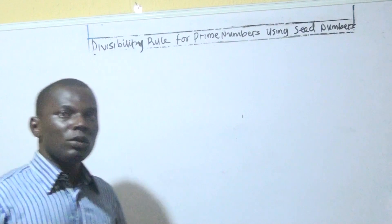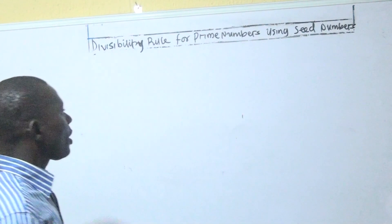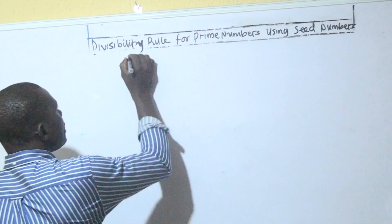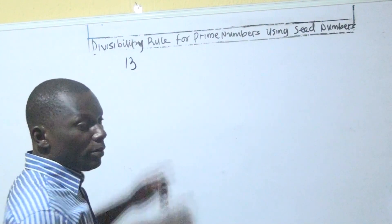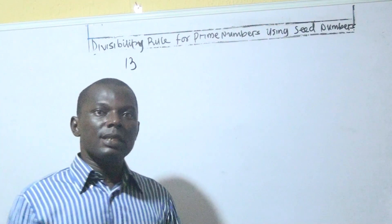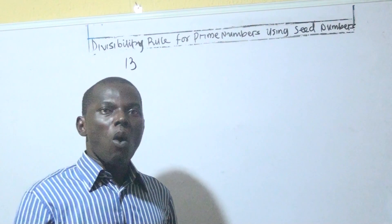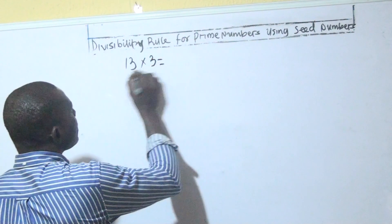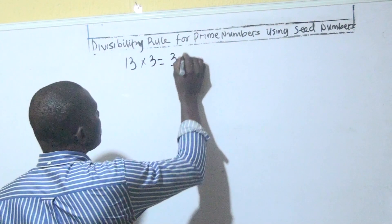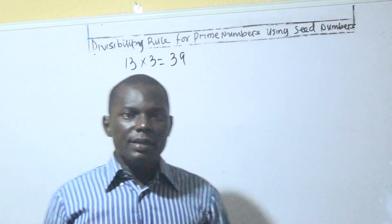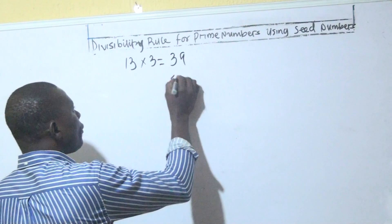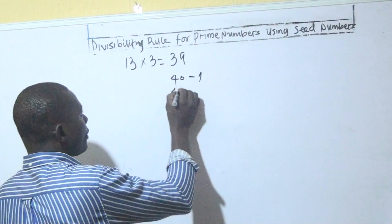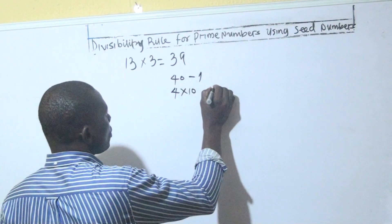Now let's look at 13 — how to derive the seed number to test for the Divisibility Rule for 13. We have 13, and we look for a number that can multiply 13 so that the unit digit ends in 1 or 9. So 3 multiplied by 13 gives us 39. And 39 is simply 40 minus 1, which we can express as 4 times 10 minus 1.